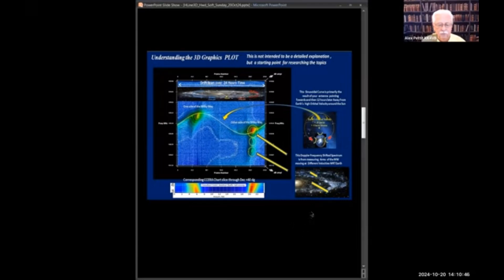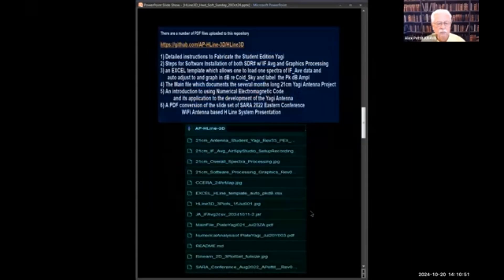I've uploaded to the repository detailed fabrication of the antenna, step-by-step processes of installing the software and using the graphics, and installing the software for the SDR and IF average and then the graphics processing. Also included is a little Excel template which will do the same thing to one set of data. I have the document which documents the past 10 months of this Yagi project, another on NEC analysis of the antenna, and I also converted my Eastern conference presentation from three years ago to PDF.